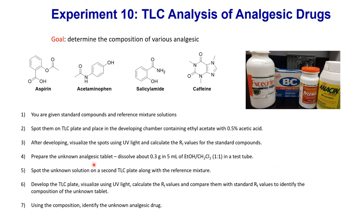On the second TLC plate, you will spot your unknown crushed tablet sample. Take about 0.3 grams of the crushed tablet and dissolve it in 5 mL of ethanol or dichloromethane in a 1:1 ratio in a test tube. Using a glass capillary tube, draw out the solution and spot it onto the TLC plate alongside the reference mixture containing all four standards. Develop the plate again, visualize with UV light, calculate the Rf values, and compare them with the Rf values of the standards to identify the composition of the unknown tablet.